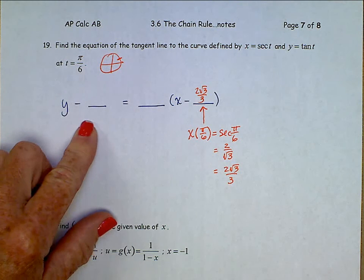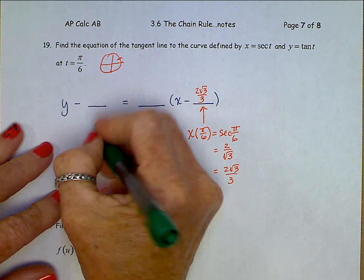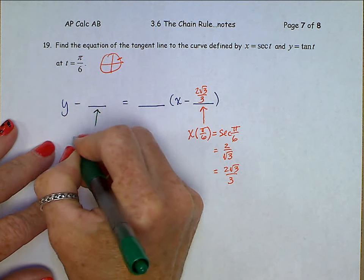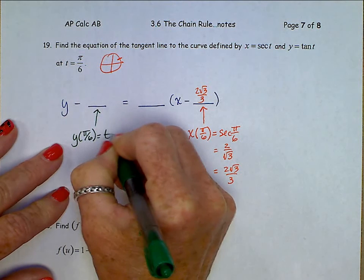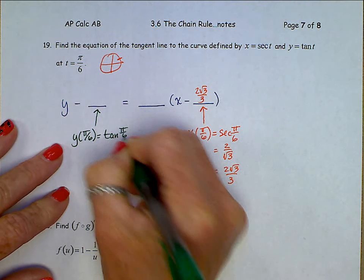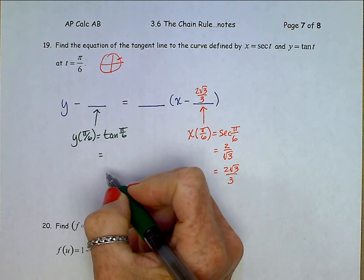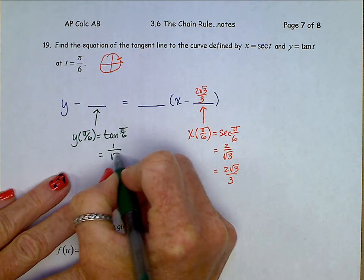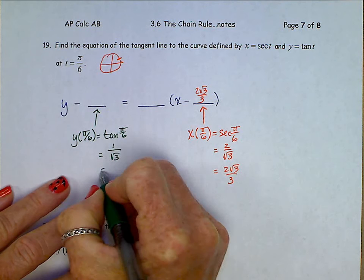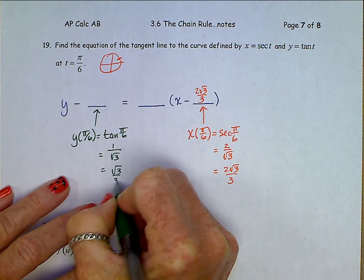This spot is y evaluated at pi over 6. So the tangent of pi over 6, 1 half over square root 3 over 2, is 1 over square root 3. If we rationalize, square root 3 over 3.